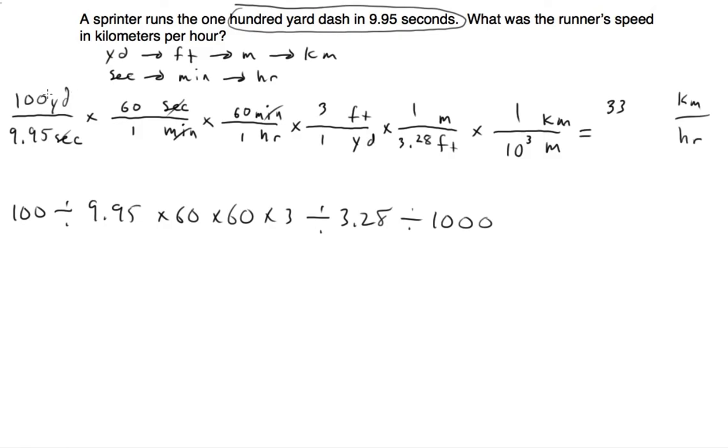Now how many sig figs do we have? So 100 yards, we're going to call that exact because it was exactly 100 yards as given. This is 3 sig figs. 60 and 60, those are exact numbers. This is exact. This is 3 sig figs. So we're going to have three significant digits. So it comes out to 33.1 kilometers per hour.